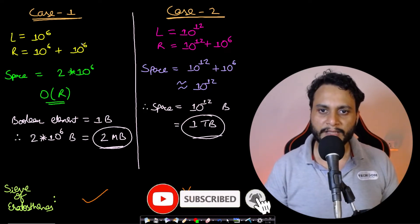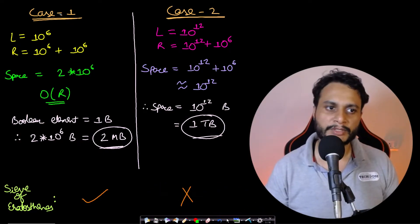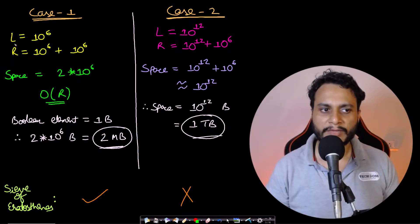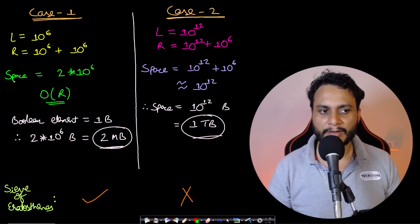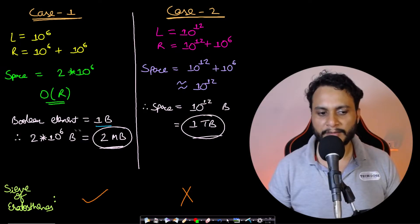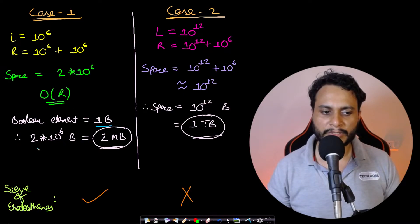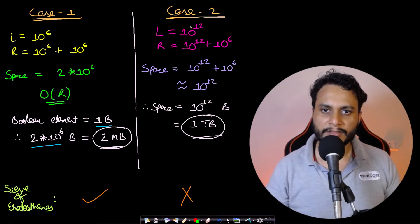Let's consider two cases to see what space is required by the sieve of Eratosthenes. In case one, L equals 10 to the power 6 and R equals 10 to the power 6 plus 10 to the power 6. The space required will be 2 × 10^6, which is O(R). Taking a boolean element as one byte, the total space required will be 2 × 10^6 bytes, which equals 2 MB.